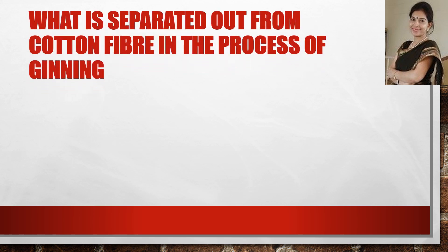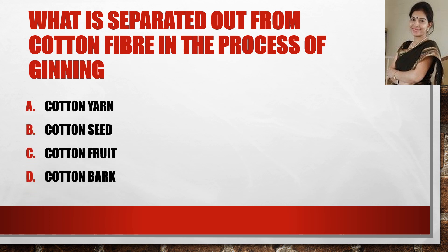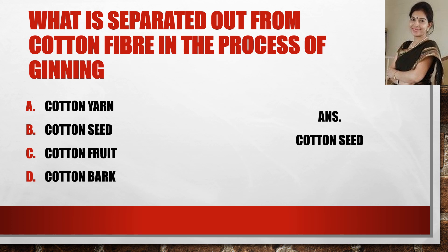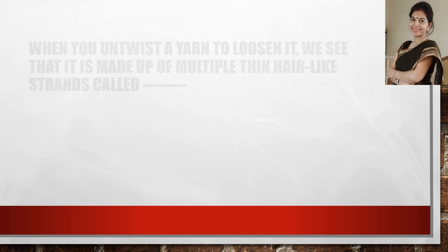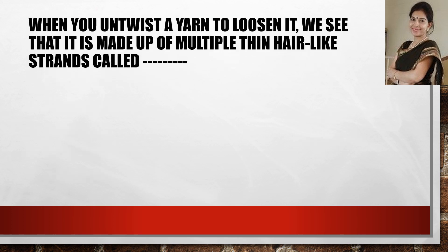Now the next question: what is separated out from cotton fiber in the process of ginning? You have to be really very quick. The answer is seeds.